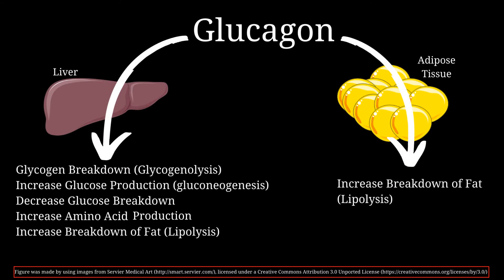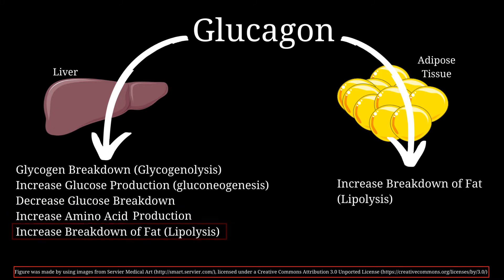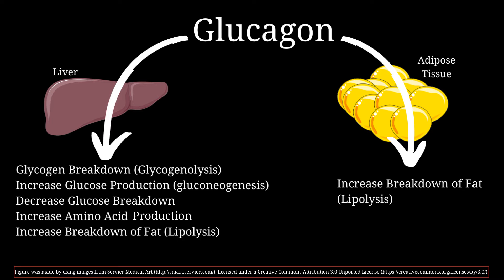Glucagon, as opposed to insulin, does not have many receptors in the body. Its main receptors are in the liver and adipose tissue. In the liver, glucagon breaks down stored glycogen and releases it as glucose, stimulates gluconeogenesis, and inhibits further glucose breakdown — essentially raising blood glucose levels in every way it can. It also breaks down protein into amino acids and fat into free fatty acids, which are then catabolized to generate more energy. In adipose tissue, glucagon breaks down fat into free fatty acids for additional energy. Overall, glucagon provides a catabolic state to fuel the body's basal metabolism.